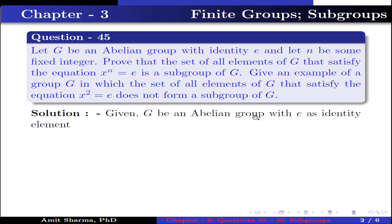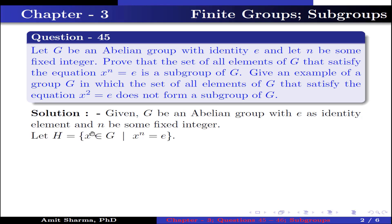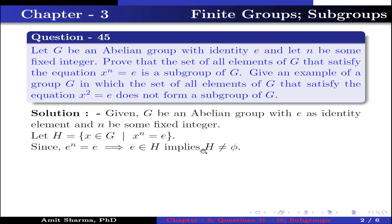Given: G is an Abelian group with E as identity element and N is some fixed integer. Let H be the set containing elements x belonging to G such that x to the power n equals identity. Since e to the power n equals E, this implies E belongs to H, which further implies H is not equal to the empty set.